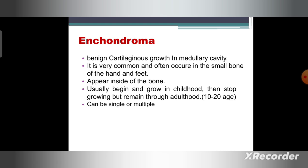In the last presentation we talked about the various types of bone tumor and discussed the types of benign tumors. Now in this presentation we will also discuss the other type of benign bone tumor. The first is enchondroma, which is a benign cartilaginous growth in the medullary cavity.